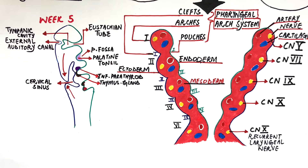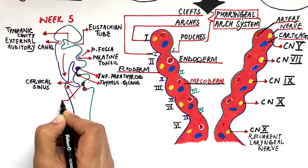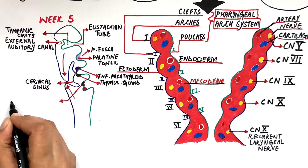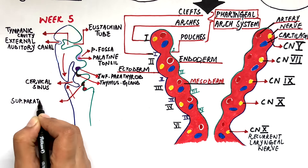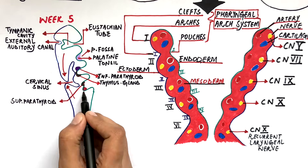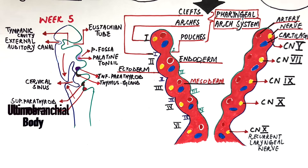The fourth pouch also expands dorsally and ventrally. Its dorsal component will give rise to the superior parathyroid gland, and its ventral component will form the ultimobranchial body, which will later give rise to the parafollicular cells of the thyroid gland.